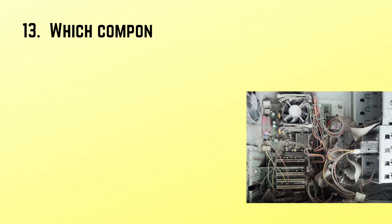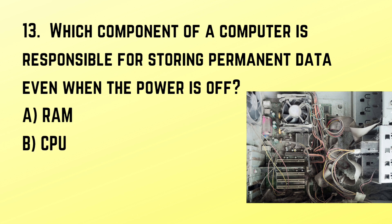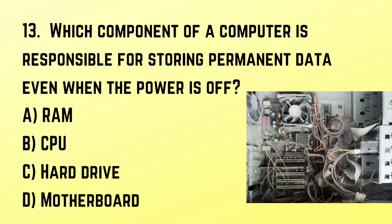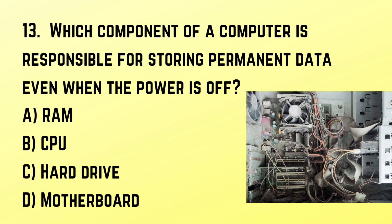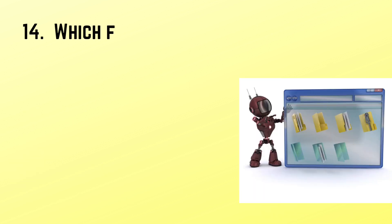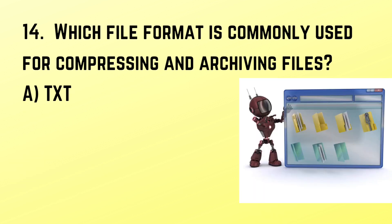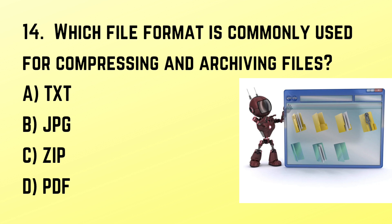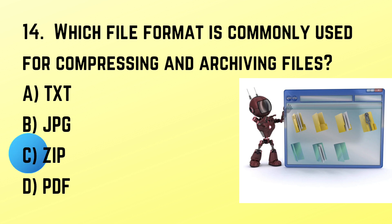Question number 13: Which component of a computer is responsible for storing permanent data even when the power is off? Correct answer: C. Hard drive. Question number 14: Which file format is commonly used for compressing and archiving files? Correct answer: C. ZIP.